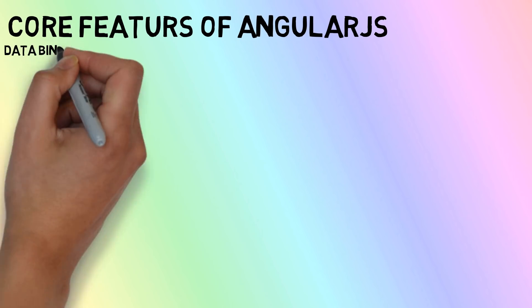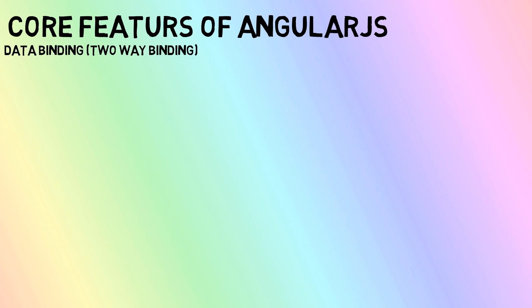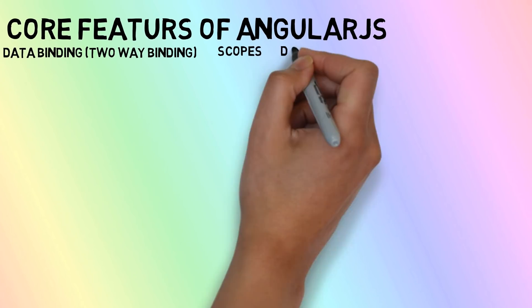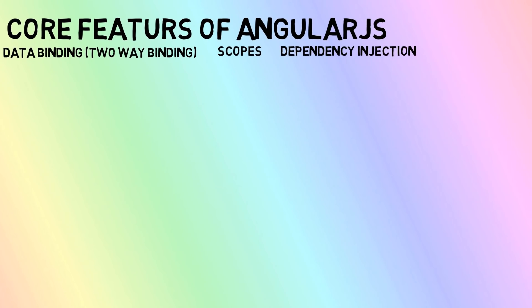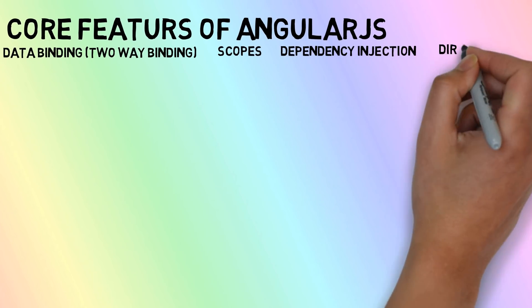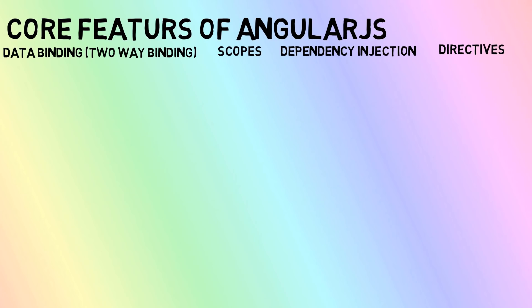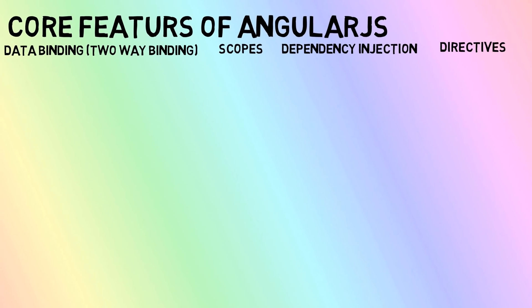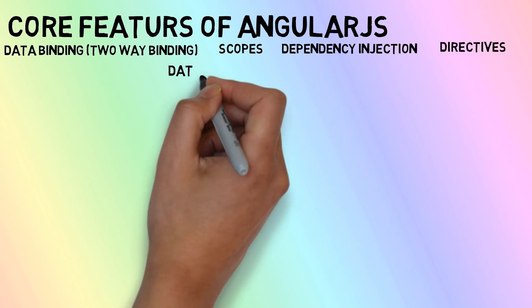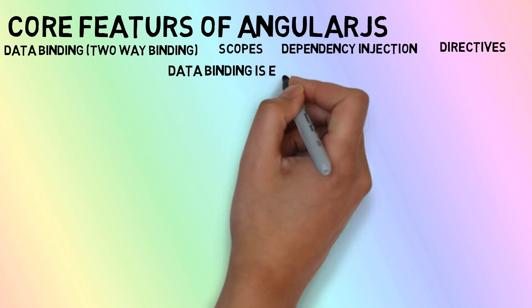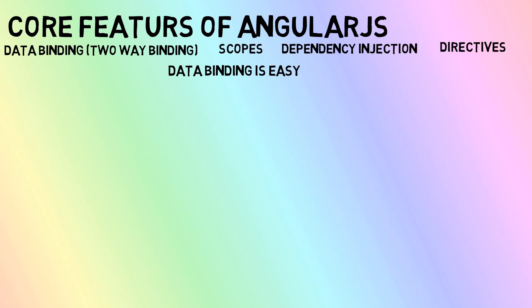The core features of AngularJS are data binding, scopes, dependency injection, and directives. Now we will discuss all of them one by one. The first feature is data binding. Data binding is an important feature of AngularJS.